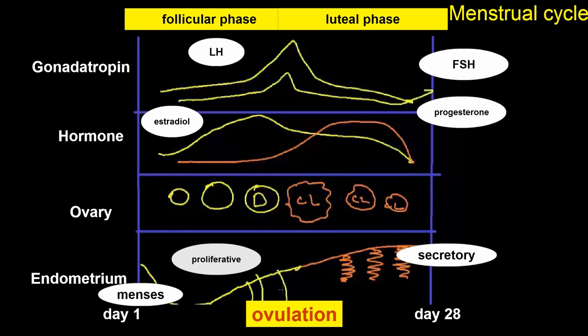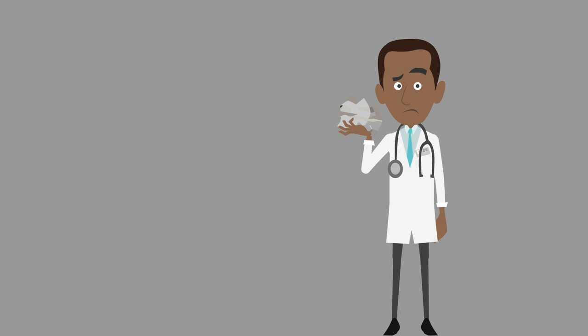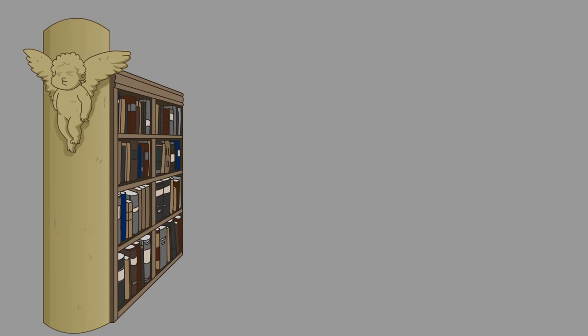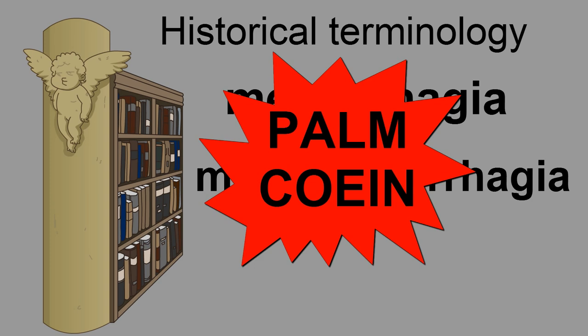That was a lot of hardcore basic endocrinology. Let's move back to the world of clinical diagnosis. Historically, there have been many terms used to describe AUB, such as metrorrhagia or menometrorrhagia. However, the acronym PALM-COEIN has been introduced to describe AUB, replacing these historical terms. Here is a clever cartoon illustration created by Dr. Asha Youssef that helps explain the PALM-COEIN acronym.